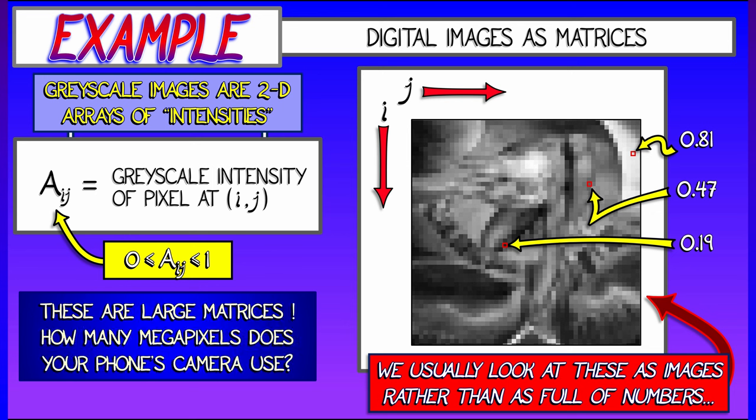Now notice, these are really large matrices. If you snap a picture on your camera, what's the size of the matrix that's involved? That's pretty big.